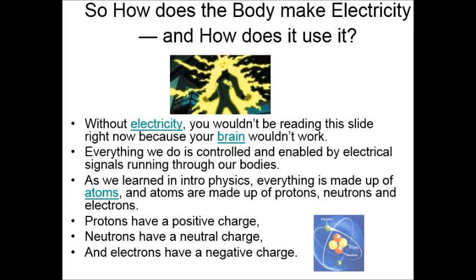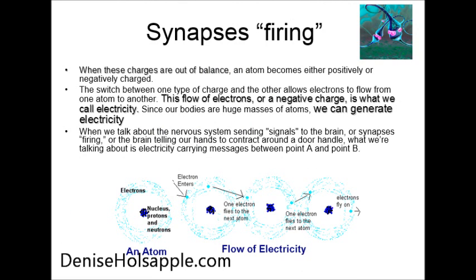Let's talk about synapses firing. Basically, when these charges are out of balance, an atom becomes either positively or negatively charged. The switch between one type of charge and the other allows electrons to flow from one atom to another. This flow of electrons, or a negative charge, is what we call electricity. Since our bodies are a huge mass of atoms, we can generate electricity — when the nervous system sends signals to the brain, or synapses fire, or the brain tells our hands to grip a door handle or kick a ball. It's electricity carrying messages from point A to point B.